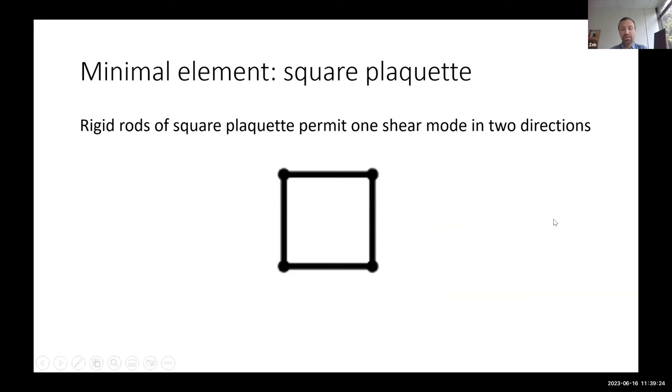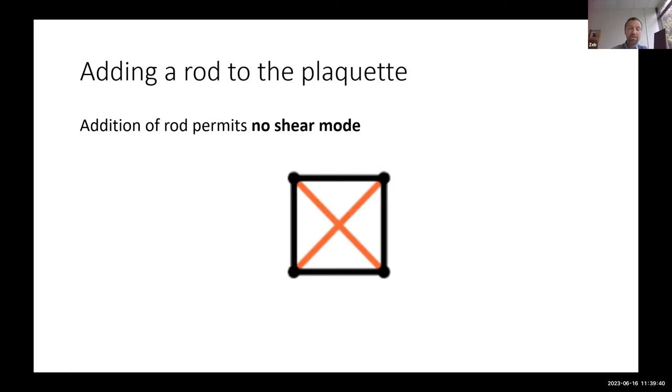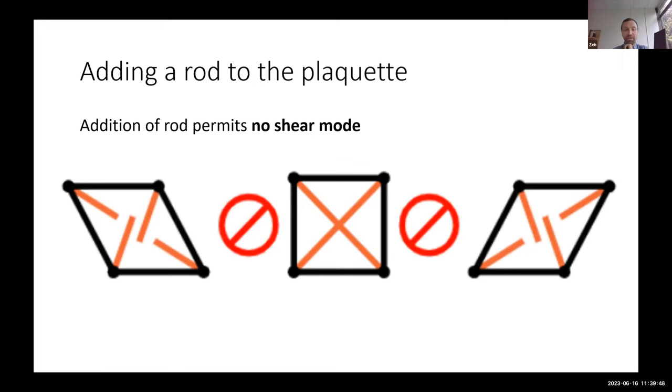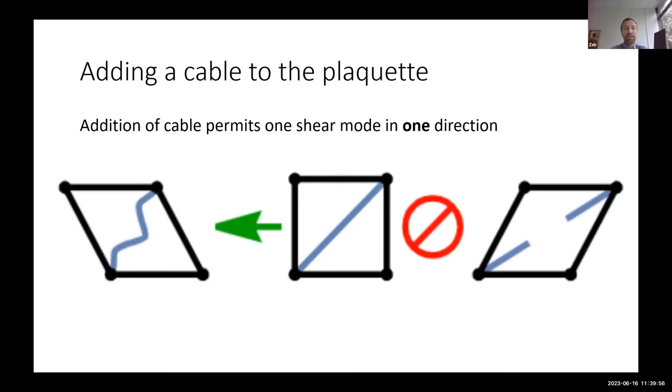To study that question, I take the simplest element I can. This is a simple four-bar linkage or a plaquette, and it has a shearing mode. The rule is that these are rods, so I can't change their length, but I can change the angles between them. So I can shear to the left or shear to the right. Now, if I add a rigid rod connecting here, suddenly it's rigid. I cannot shear it to the left or to the right without costing energy with it tensioning or even breaking the rods. And then a cable, it does something in between. I'm still allowed to shear to the left because the cable will just crumple, but shearing to the right costs tension energy here.